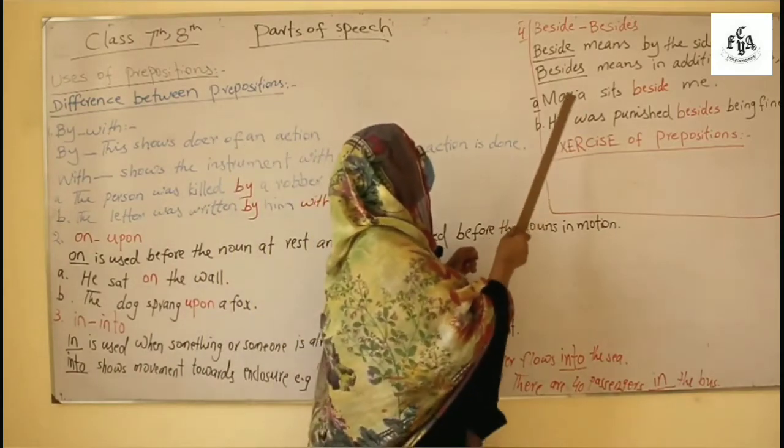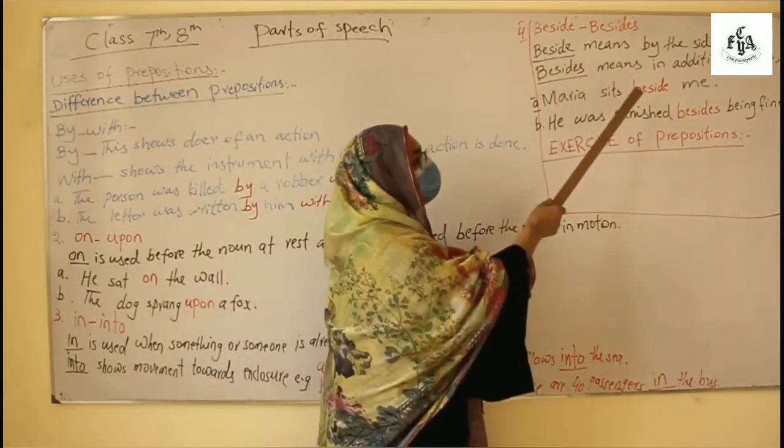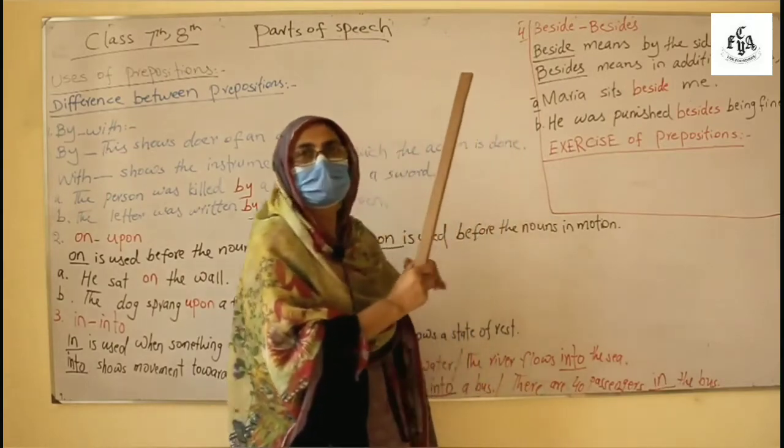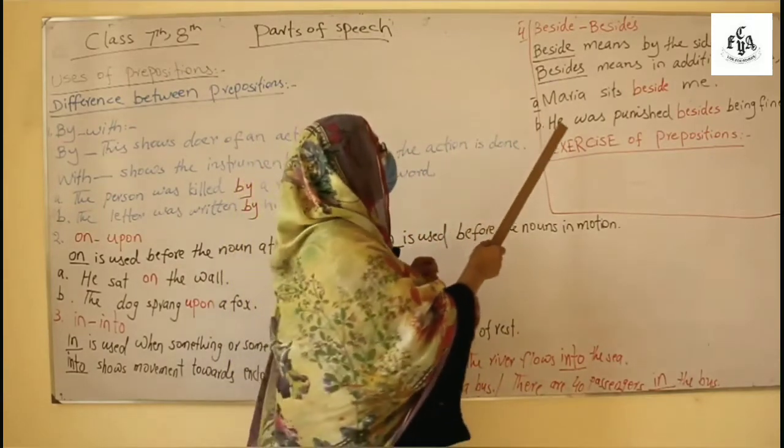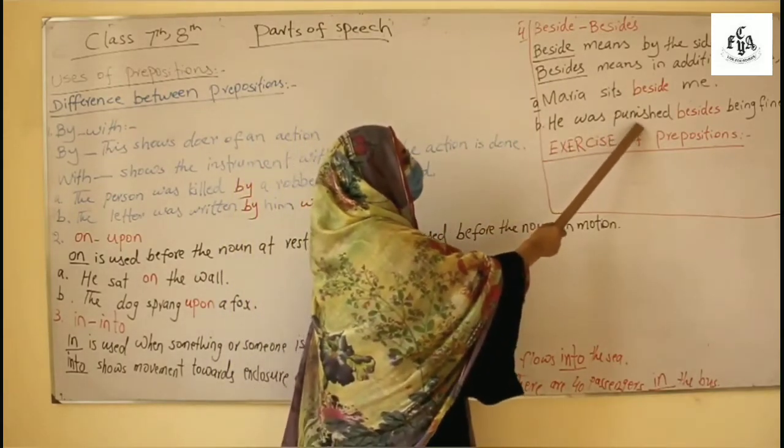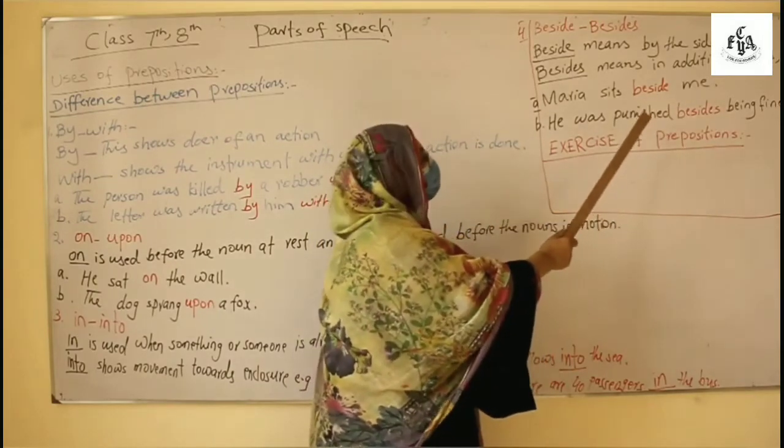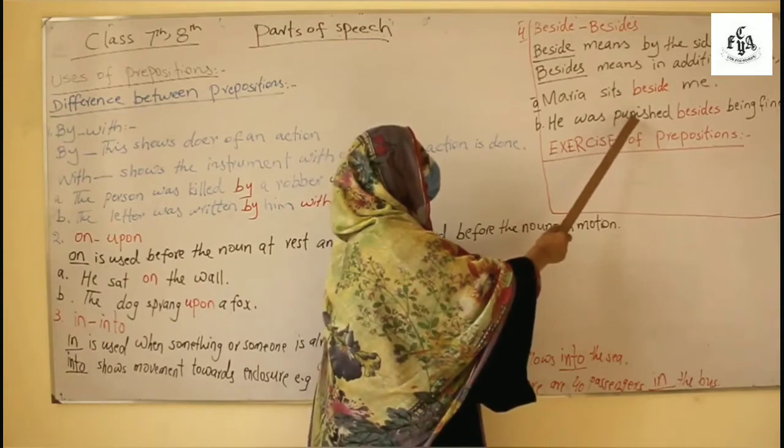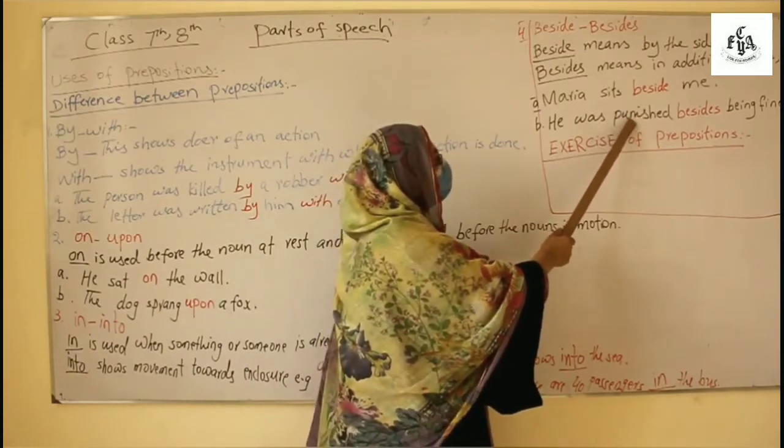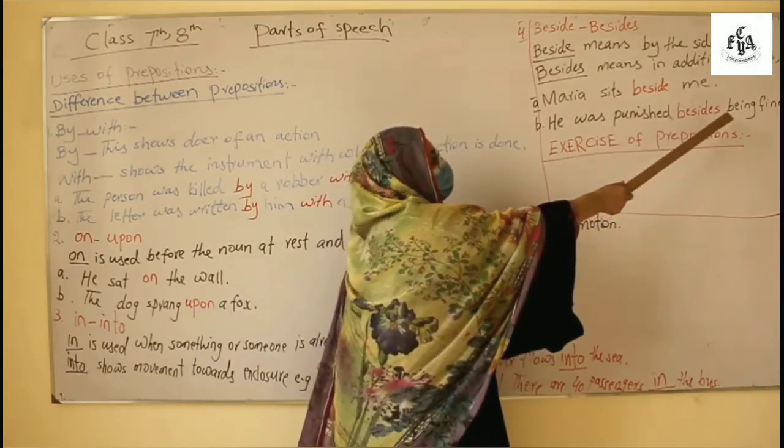And what besides means in addition to other than that. How like he was punished besides being fined. Two actions see in addition to means he got punishment plus he was being fined.